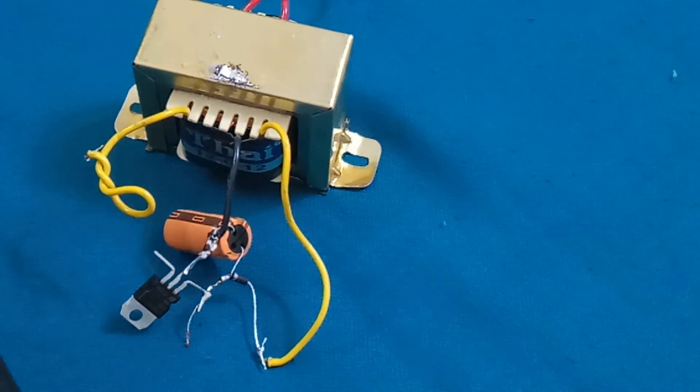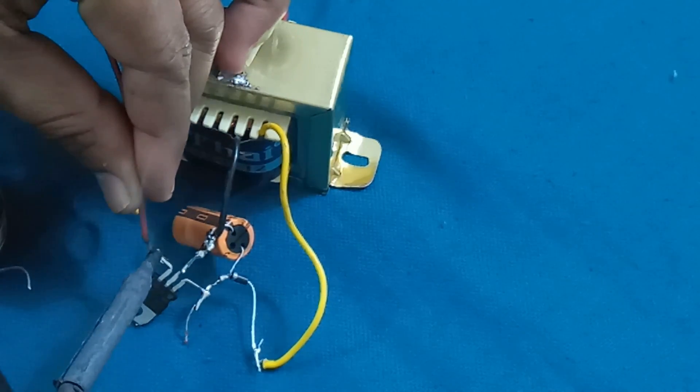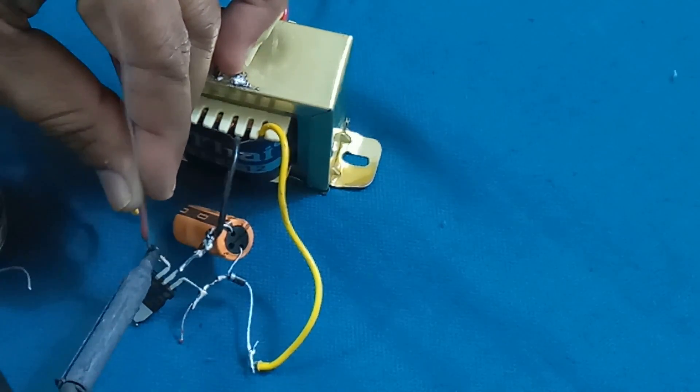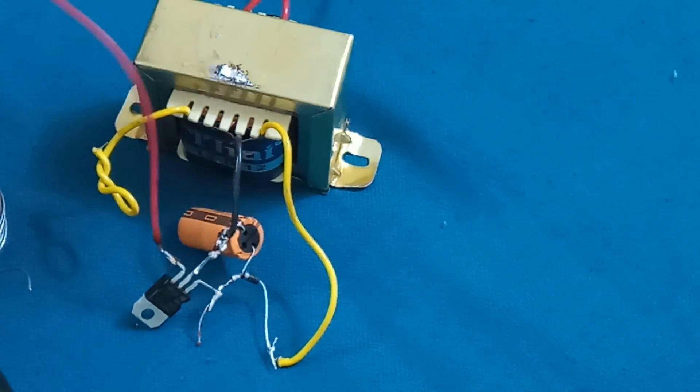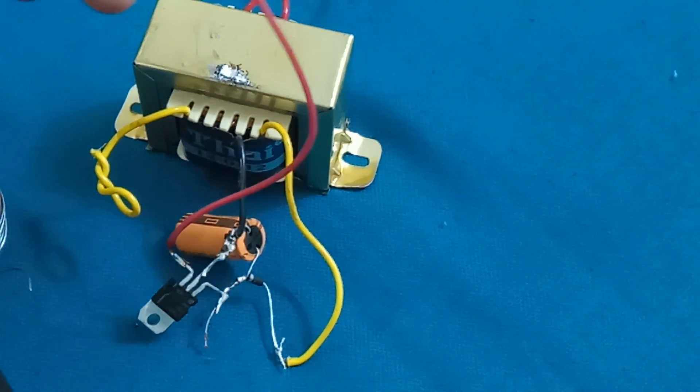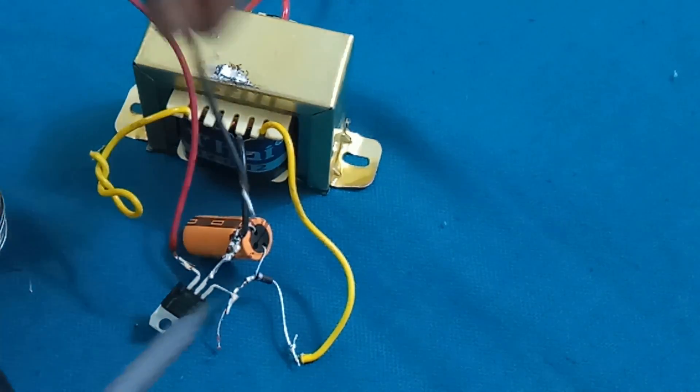Now I will take this positive output. This one is the positive output five volts, this output wire. This one is the negative output wire. I will connect this negative output negative probe.